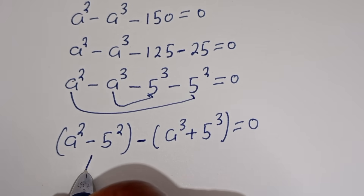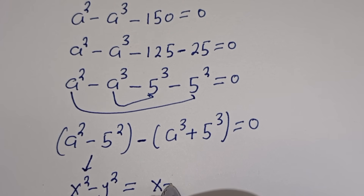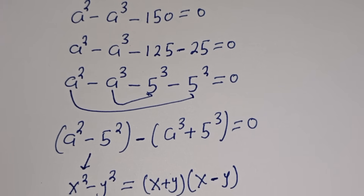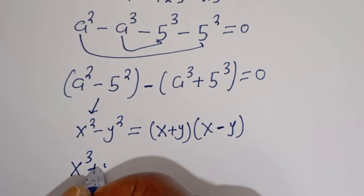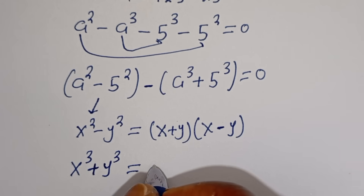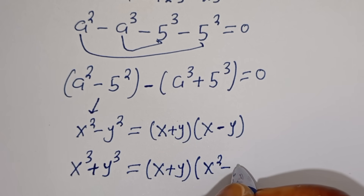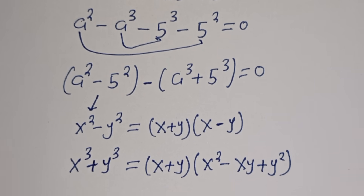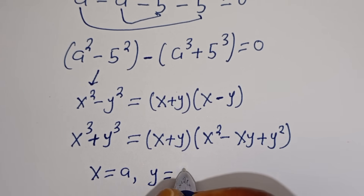Now if you look at this, A squared minus 5 squared is in the form of a difference of squares. If you have S squared minus Y squared, this equals S plus Y times S minus Y. Also, if you have S to the power of 3 plus Y to the power of 3, this equals S plus Y times S squared minus SY plus Y squared. Here, S is equal to A and Y is equal to 5.